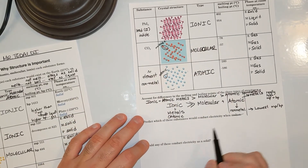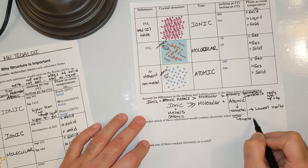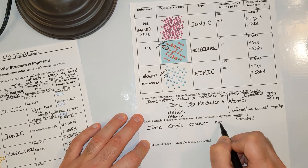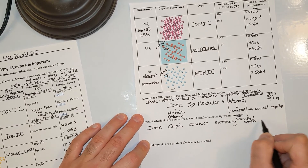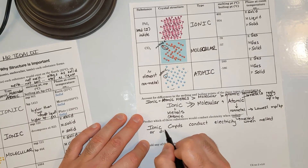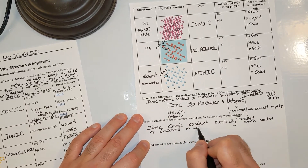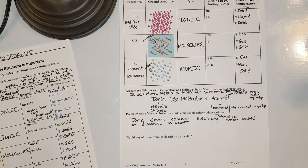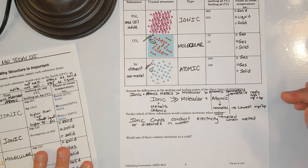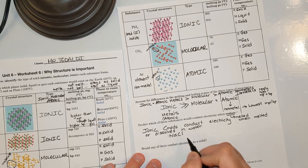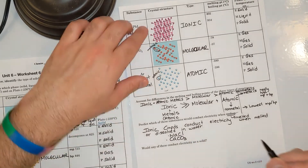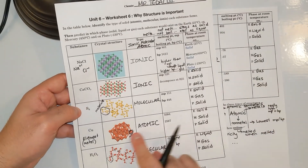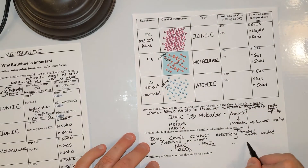Next question: predict which substances would conduct electricity when molten — which means melted. Ionic compounds conduct electricity when melted or dissolved in water. If you remember the light bulb activity, sodium chloride dissolved in water made the light bulb turn on — that's true for all ionic compounds. So NaCl, CaCO3, and PbI2 would conduct. I'm also going to add copper, because things that have connections between particles are going to conduct electricity.